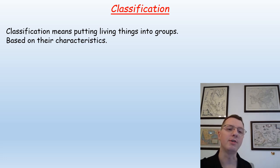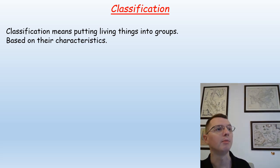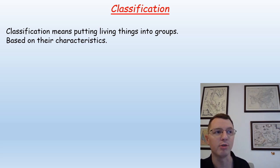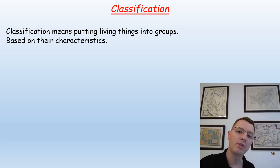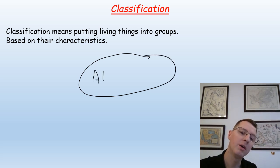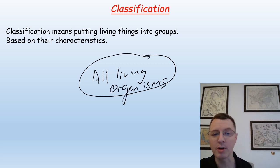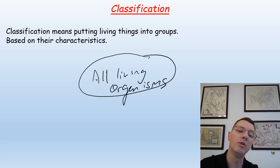Classification means putting living things into groups based on their characteristics. Scientists have been doing this for a very long time, discussing and coming up with a list of characteristics which all scientists agree with for each particular group. The very largest group that you can possibly have is all living organisms - so how does a scientist classify an organism as living or perhaps non-living?